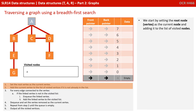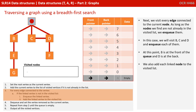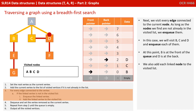We start by setting the root node, or vertex, as the current node and adding it to the list of visited nodes. Next, we visit every edge connected to the current node. As long as the nodes we find are not already in the visited list, we enqueue them. In this case, we will visit B, C and D, and enqueue each of them. At this point, B is at the front of the queue and D is at the back. We also add each linked node to the visited list.